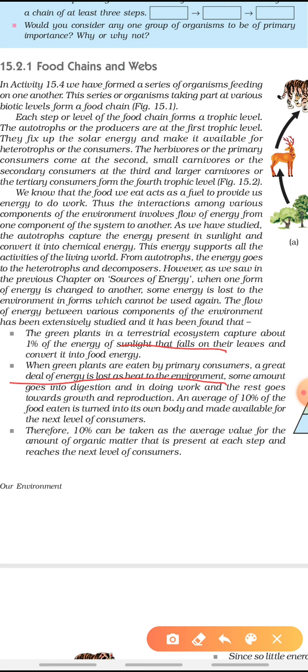As an average, 10% of food eaten is turned into its own body and made available for the next trophic level. 10% can be taken as the average value for the amount of organic matter present at each step that reaches the next level of consumer. Only 10% transfers to the next trophic level. The remaining 90% is used for growth, reproduction, digestion, metabolic processes, and some is lost as heat from our body.